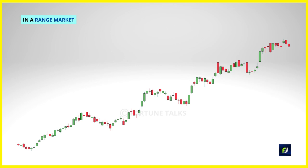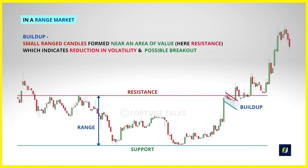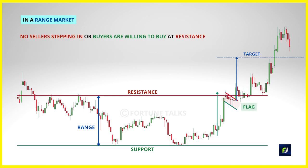There are also times when a bull flag forms when the market is in a range near a resistance level. This is the concept of breakouts with buildup near a resistance level. A buildup near resistance happens because there are no sellers stepping in, or buyers are willing to buy at higher prices — a sign of strength signaling a potential higher breakout. To trade this: identify a market in a range, wait for a flag pattern to form near the resistance in the form of a buildup, then trade the break above the buildup or wait for the market to close above the resistance. Entry, stop loss, and target criteria remain the same.